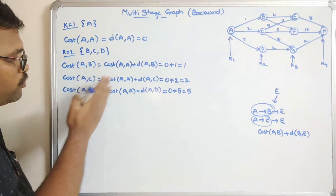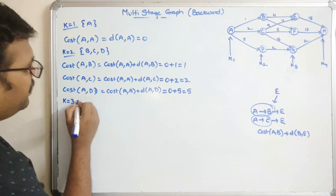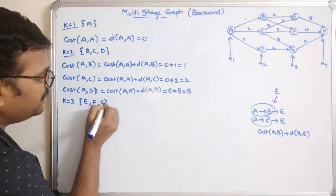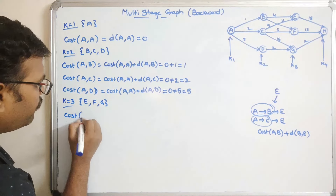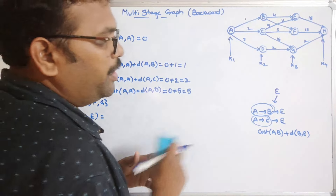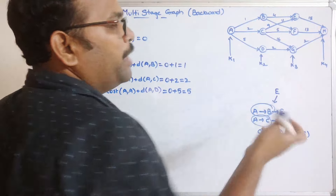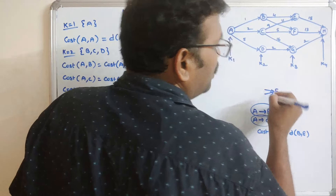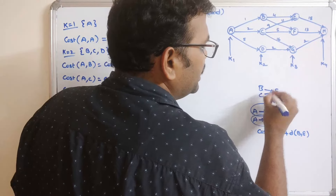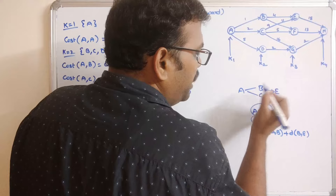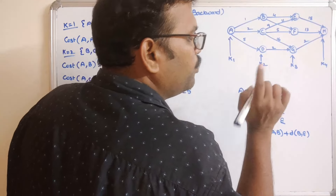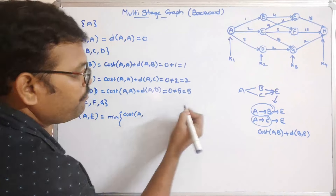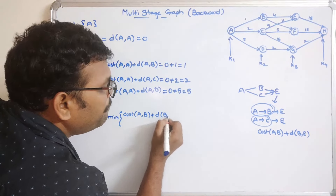We now have the distances from source to B (1), source to C (2), and source to D (5). Moving to stage 3 with vertices E, F, and G, we need to find cost(A, E). The incoming edges to E are two: one from B and one from C. We find the minimum of cost(A, B) + distance(B, E) and cost(A, C) + distance(C, E).